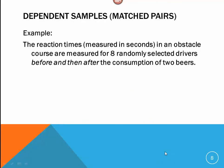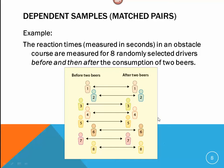We could do the same experiment, except in a dependent scenario, we would take the same person, have them run the obstacle course before drinking two beers, and then have the same person after two beers run the same obstacle course, and compare the reaction times.